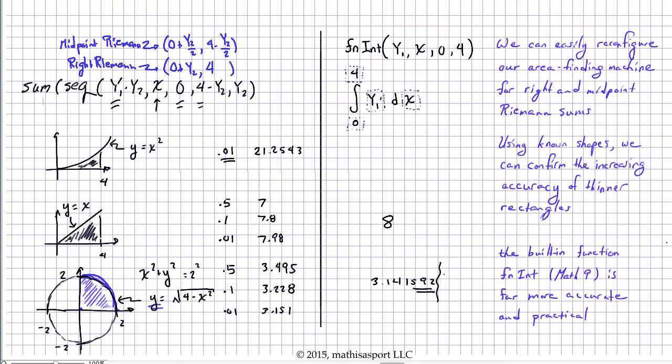Finally, the built-in function, which you can find with MATH9, known as F-N-I-N-T, in either this representation up here or in this representation on your calculator, allows you to do all of these signed area numerical approximations almost instantaneously and with very high accuracy.